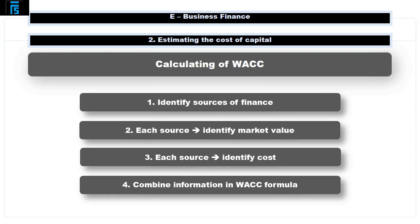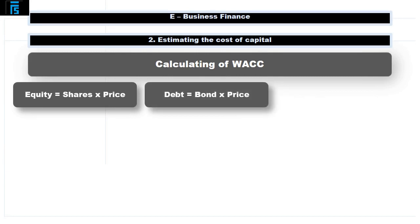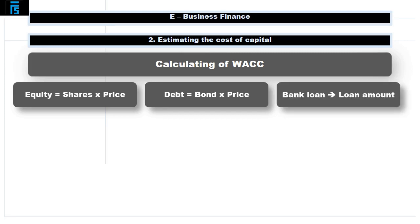Step 1: identify the sources of finance. Step 2: for each source, identify the market value. Step 3: for each source, identify the cost. Step 4: combine the information in the WACC formula. Sources of finance have been discussed separately in the sources of finance presentation, and similarly, the cost of debt and equity have been covered elsewhere. The market value of finance will be the value at which the source can be traded.